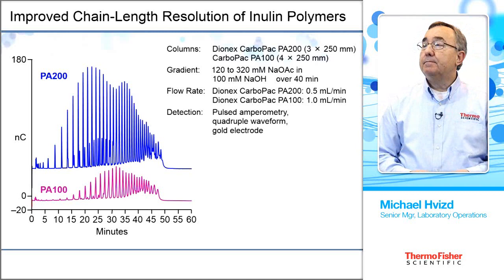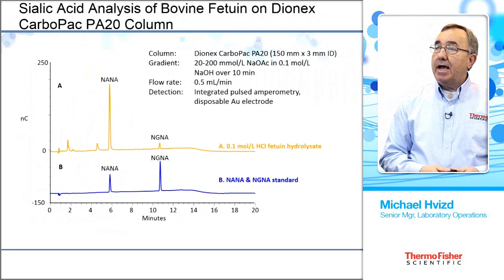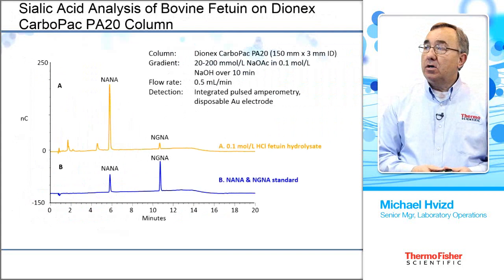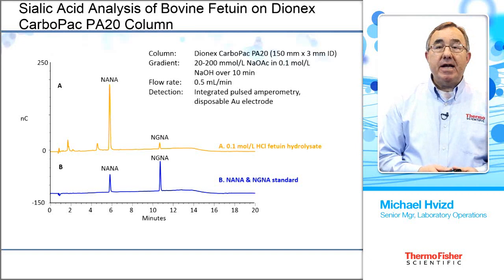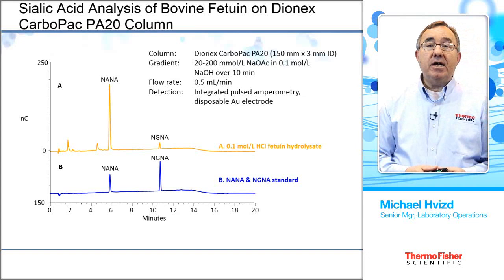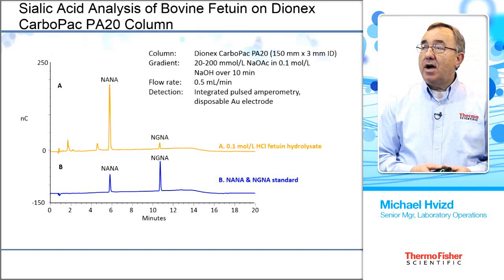Moving more into biochemistry, we look at sialic acid analysis. Bovine fetuin is a glycoprotein that is very well characterized in the literature, and we have many applications showing its glycoproteins and oligosaccharides. Here we're looking at sialic acid analysis — we see NANA, which stands for N-acetylneuraminic acid, and NGNA, which is N-glycolylneuraminic acid. Sialic acids are terminal sugars in oligosaccharides, signaling the end of the sugar complex of the glycoprotein.